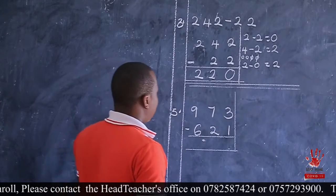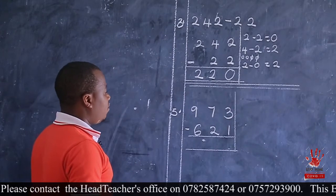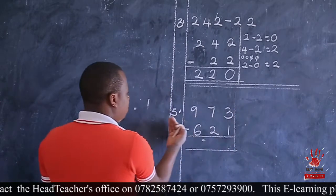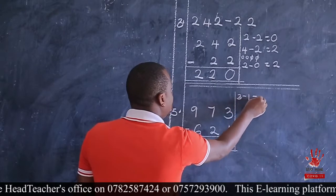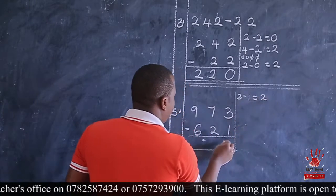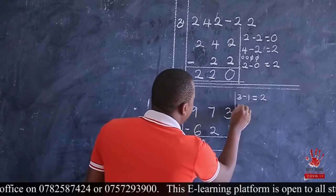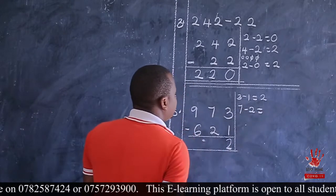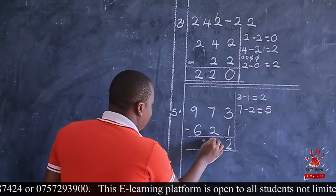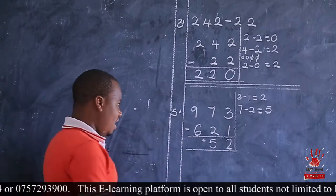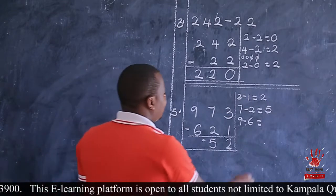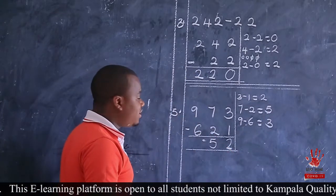Number five is saying nine hundred seventy-three take away six hundred twenty-one. We still begin from ones, going to that side. We have three take away one equals two. What is three take away one? That is two. I write two here. Then seven take away two equals five. Seven take away two is five, so I write five here. Then lastly, nine take away six. Nine take away six is three. For those who draw balls, it is okay — it is allowed.